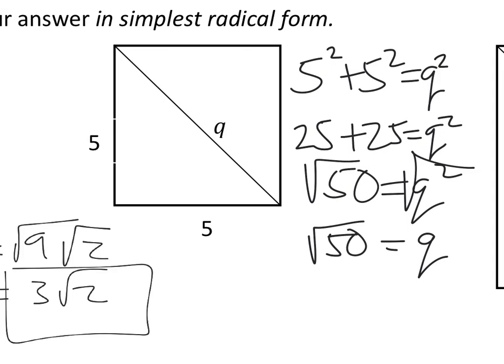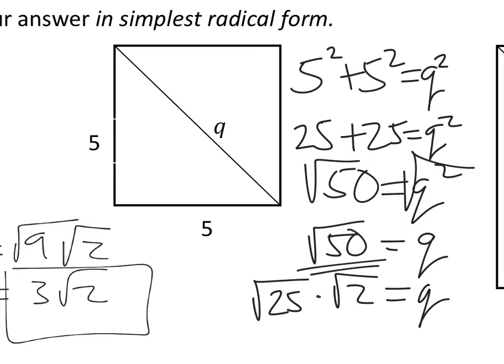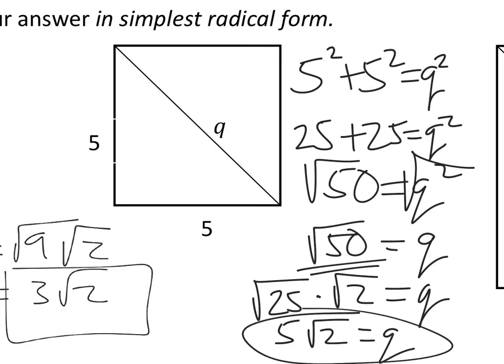Now we just have to simplify this, so we're looking for a perfect square that goes into the square root of 50. I can break it up: the square root of 25 times the square root of 2. Square root of 25 we know is 5, and there we've got 5 square root of 2.